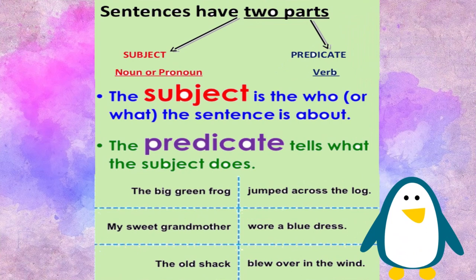Here are a few examples. The big green frog jumped across the log. The big green frog is the subject. Jumped across the log is the predicate.